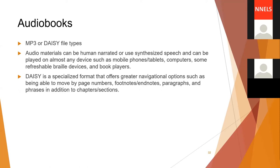When it comes to audio formats, we have MP3 or DAISY file types. These are audio materials that can be human narrated or use synthesized speech and can be played on almost any device, such as mobile phones, tablets, computers, some refreshable Braille devices, and book players. DAISY is a specialized format that offers greater navigational options, such as being able to move by page number, footnotes, endnotes, paragraphs, and phrases in addition to chapters and sections.